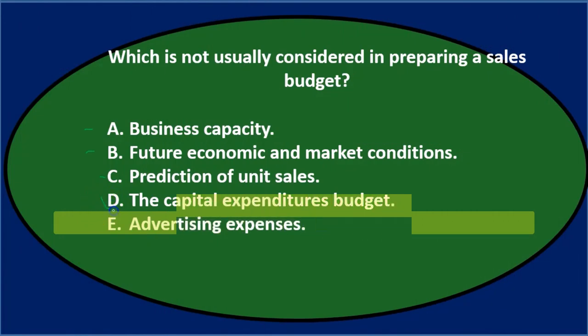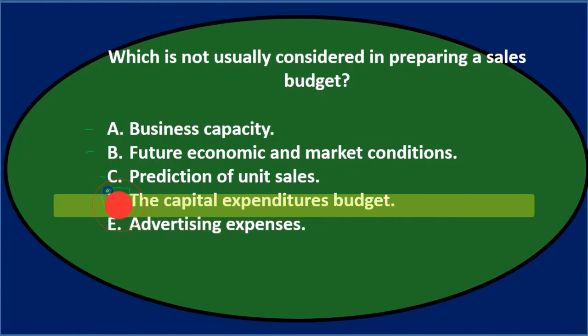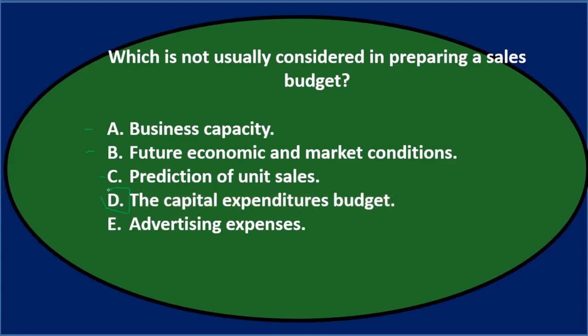Of those, I would think that D would be our final answer. Which is NOT usually considered in preparing a sales budget? D. The Capital Expenditures Budget.